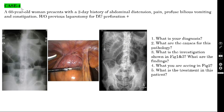Case number four: a 60-year-old woman presents with a 2-day history of abdominal distension, pain, profuse bilious vomiting, and constipation. There is a history of previous laparotomy for duodenal ulcer perforation. These four symptoms — abdominal distension, abdominal pain, bilious vomiting, and constipation/obstipation — represent the classic quartet.